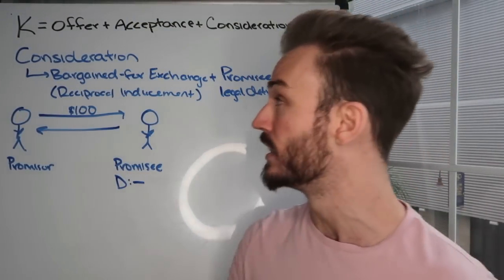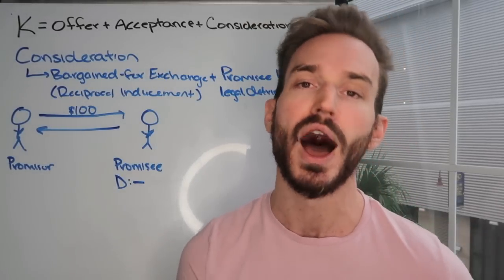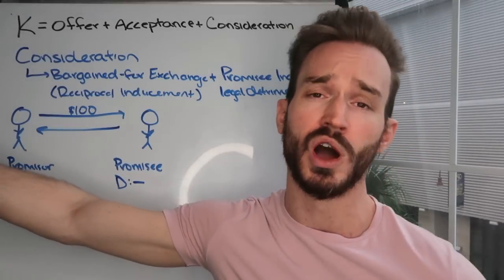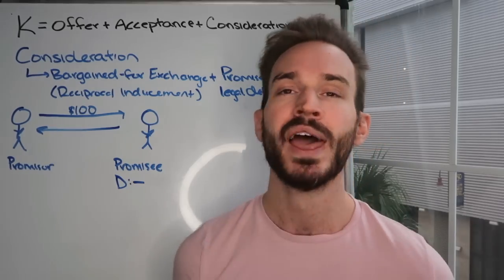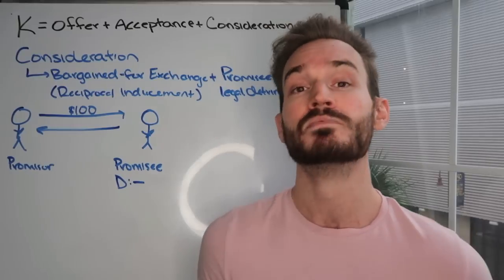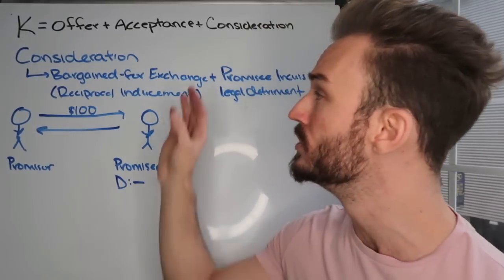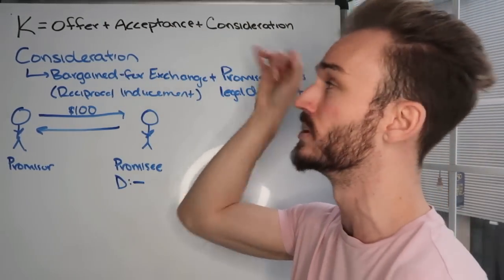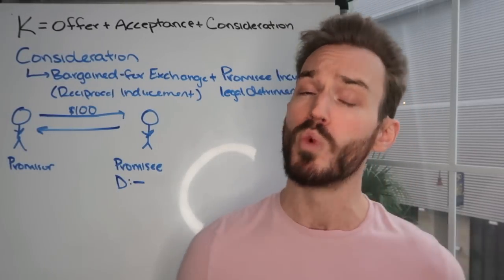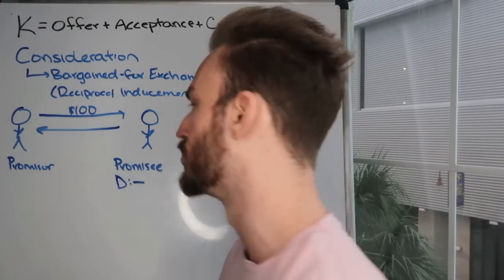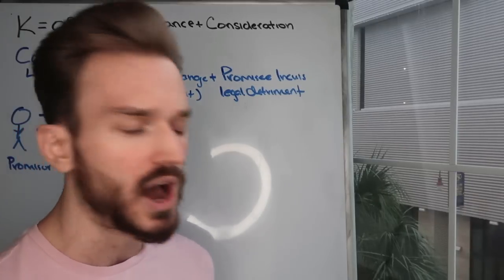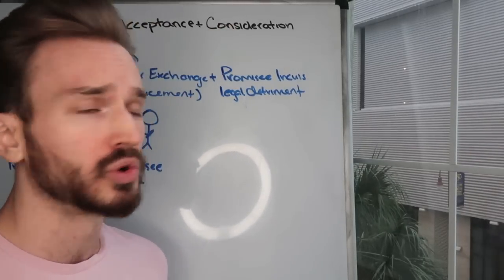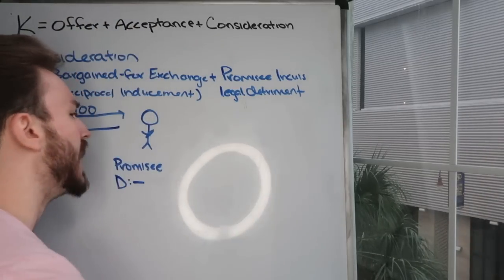Worth noting: that's not a traditional enforceable contract, but some jurisdictions have adopted laws for this situation. It's called a moral obligation plus a subsequent promise. In some jurisdictions there may still be a way to recover. Just because there's no consideration doesn't mean it's impossible to recover — it just means you're not going to recover under a traditional contract theory. There's more than one way to enforce an agreement: promissory estoppel, moral obligations plus promises, quasi contracts. But in this video we're talking about consideration under a traditional enforceable contract, and this is past consideration, which is not consideration.